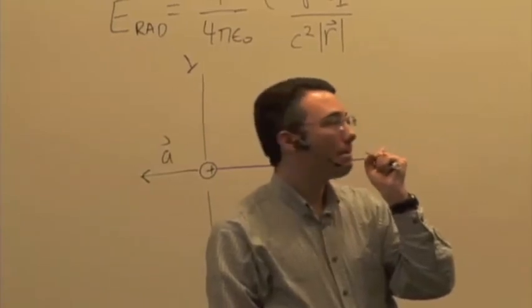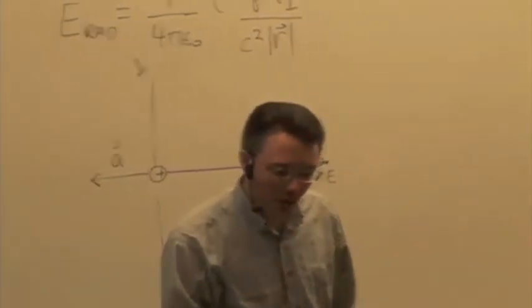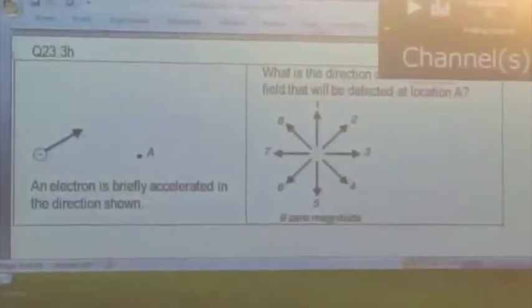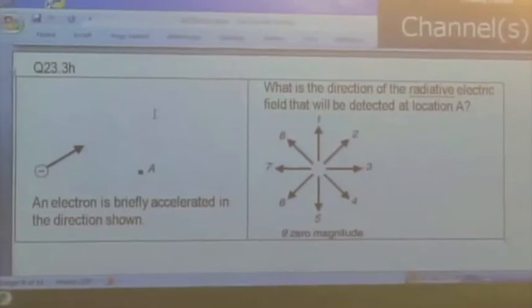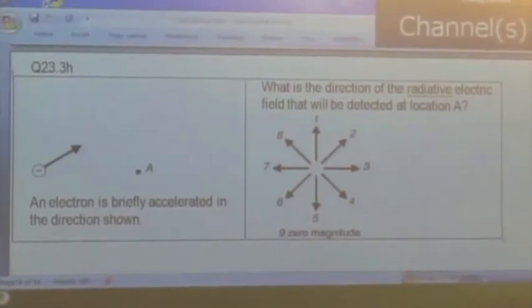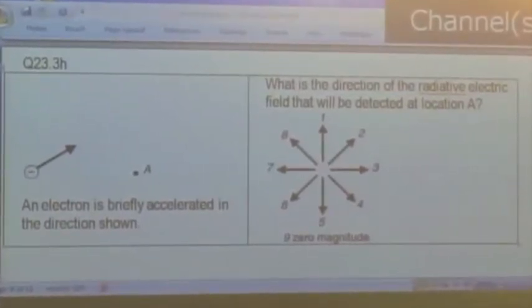And again, it takes some time after the initial acceleration for that radiation to be detected. But once it gets there, it will be in direction 4. Questions? Are we okay? One more. Let's do one more. Okay, we have an electron now. And location A is right here. Electron's accelerated up and to the right. What's the direction of the radiative electric field that will be detected at A?